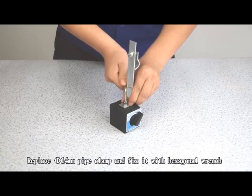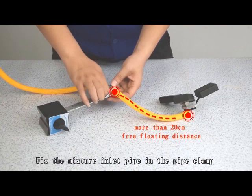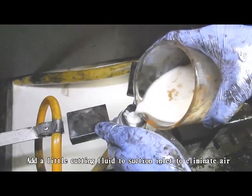Fix the mixture inlet pipe in the pipe clamp with more than 20cm free floating distance. Add a little cutting fluid to suction inlet to eliminate air.